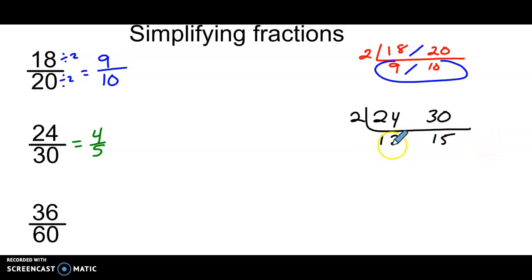Well, yeah. Well, 2 goes into 12, but 2 does not go into 15. But 3 goes into 12, and 3 goes into 15, so I could have pulled out a 3. 12 divided by 3 is 4. 15 divided by 3 is 5.